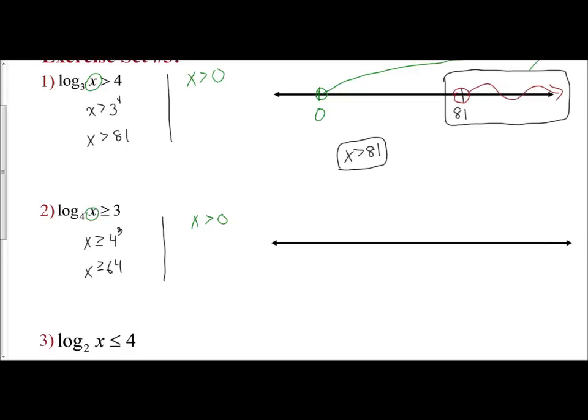The first part says my solutions are when x is greater than or equal to 64, which means close circle on 64 with an arrow to the right.